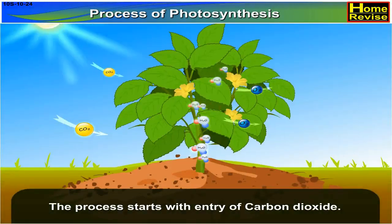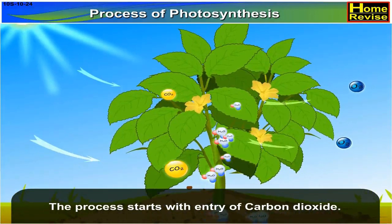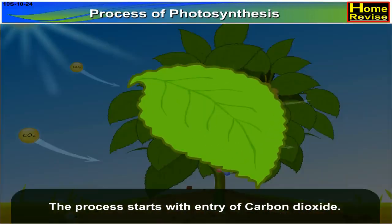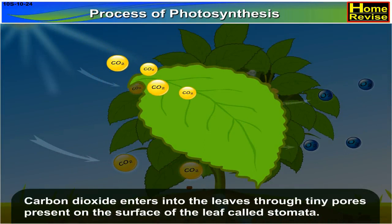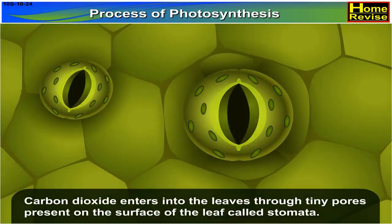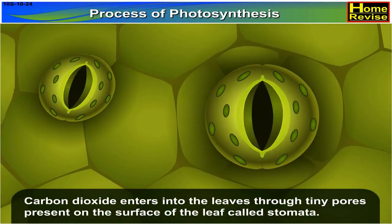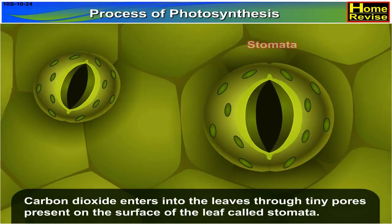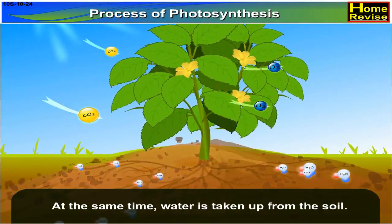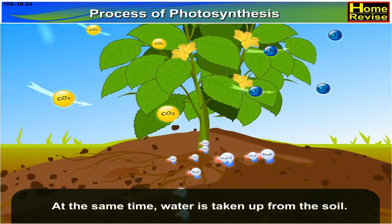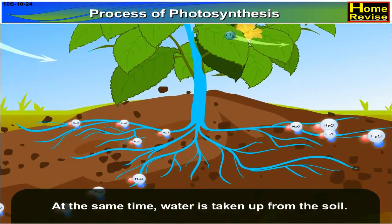The process starts with the entry of carbon dioxide. Carbon dioxide enters into the leaves through tiny pores present on the surface of the leaf called stomata. At the same time, water is taken up from the soil.